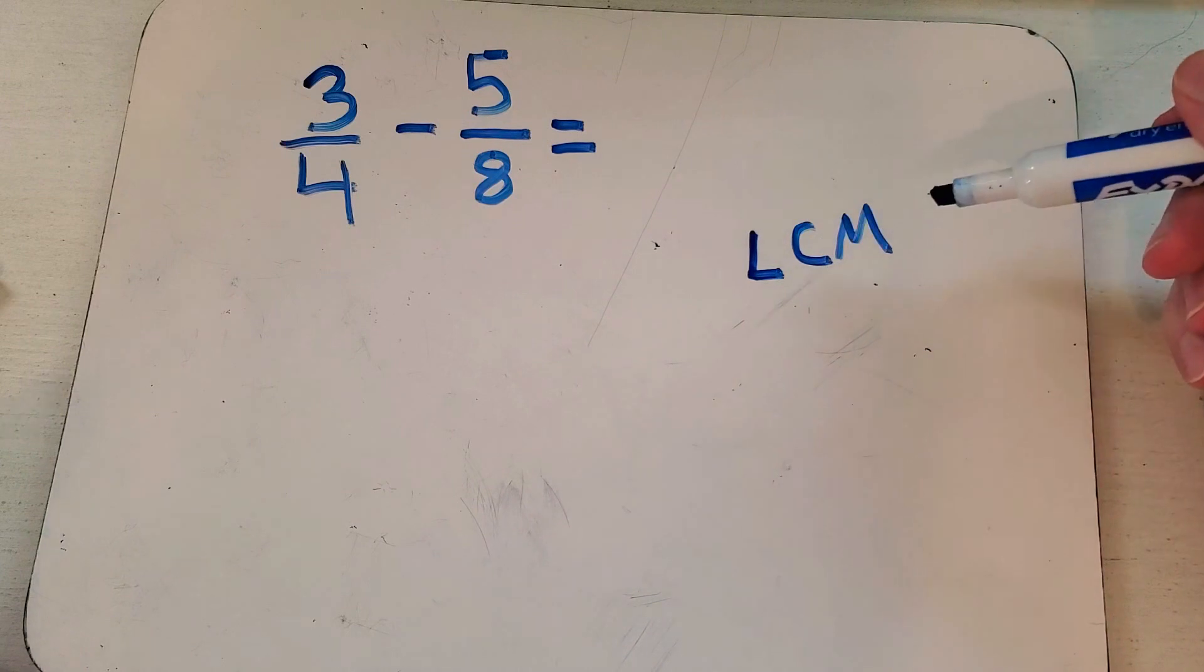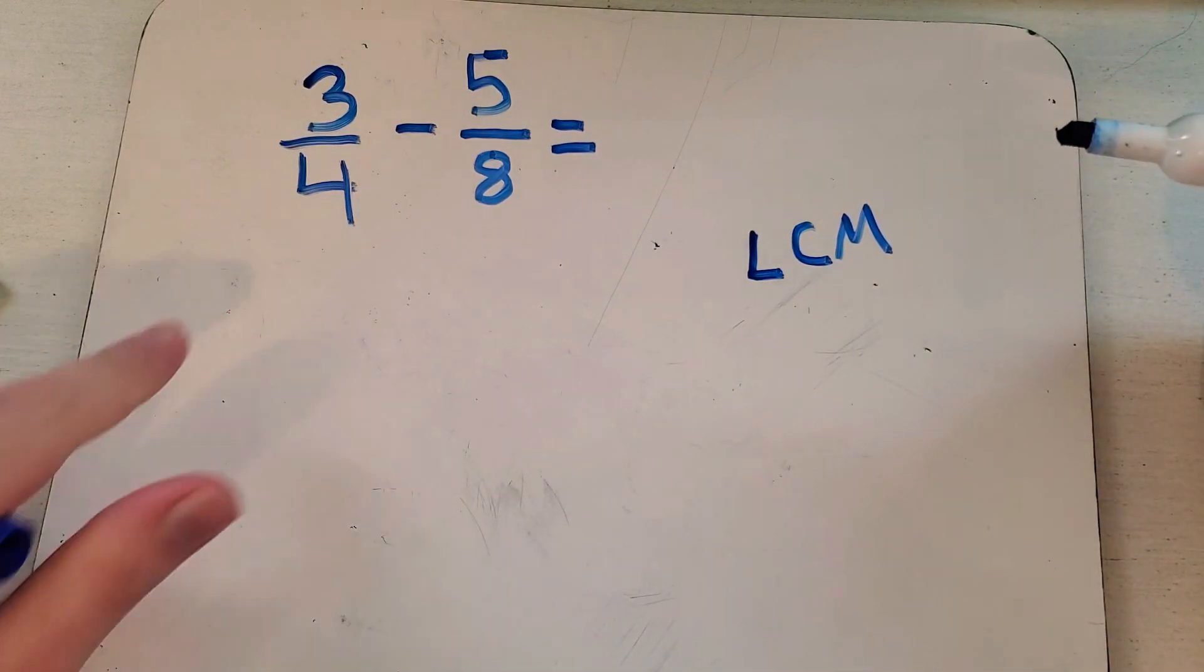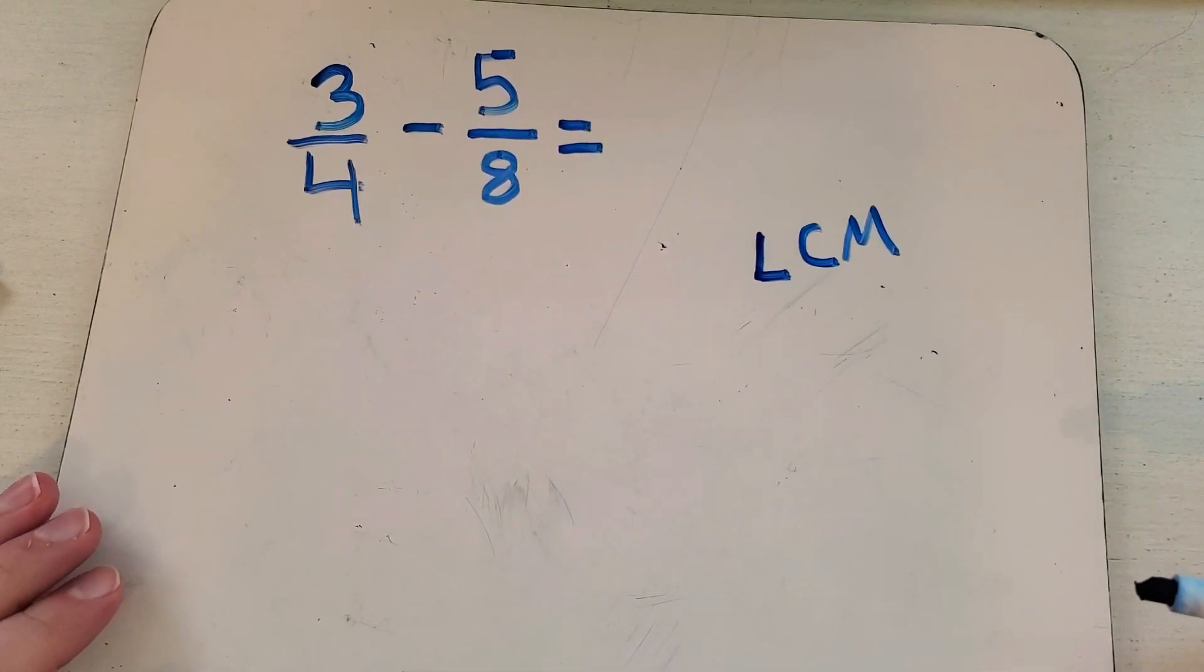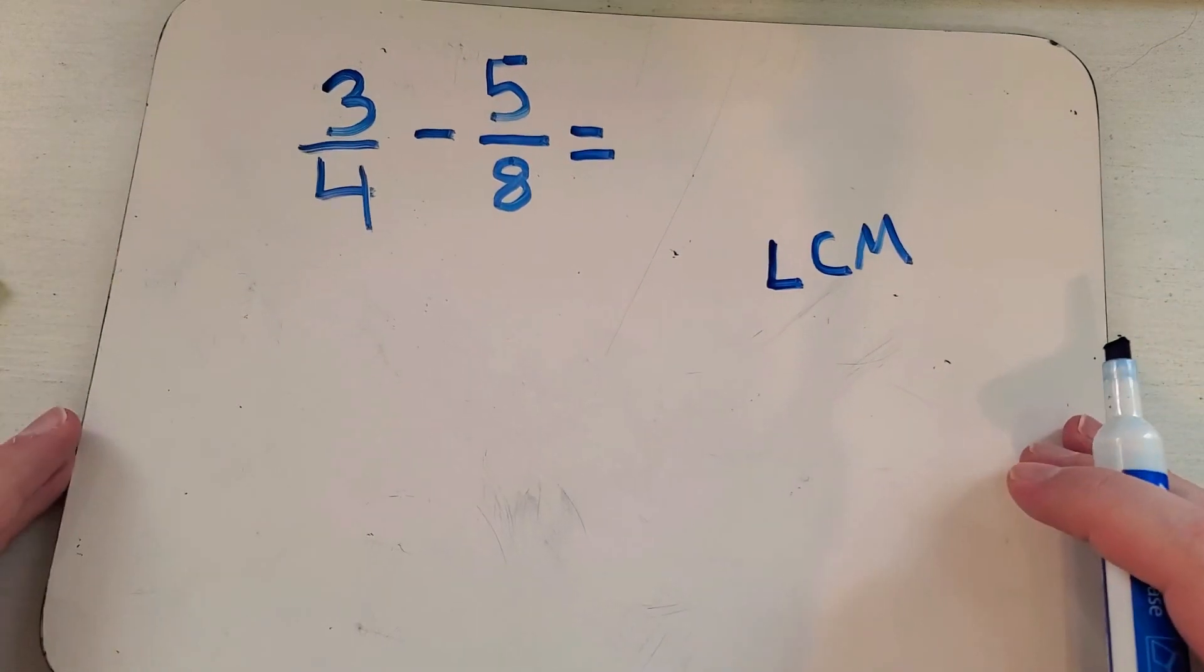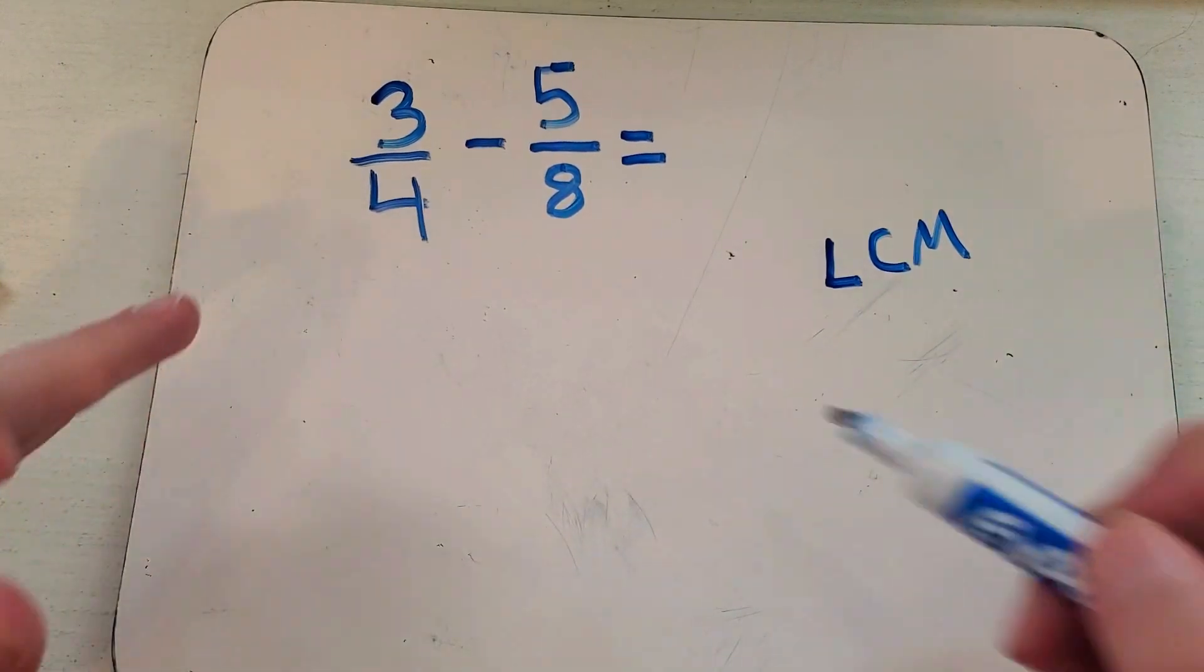That just means least common multiple. If you remember, multiples are numbers that these numbers can multiply into. So if I'm thinking of multiples of five, my multiples of five are five, ten, fifteen, twenty, twenty-five, thirty. Those are all multiples - numbers that five can multiply into.